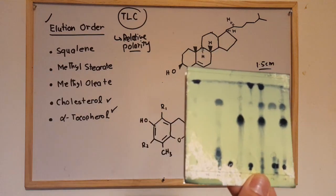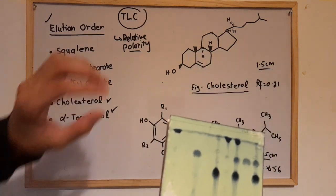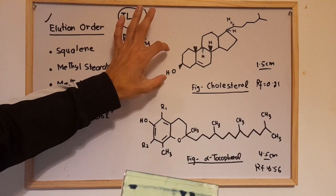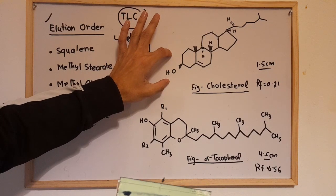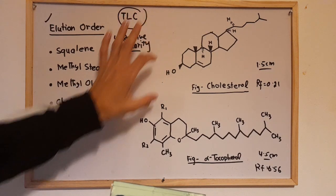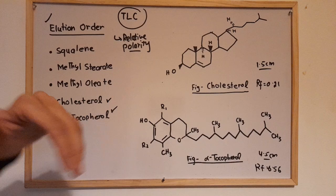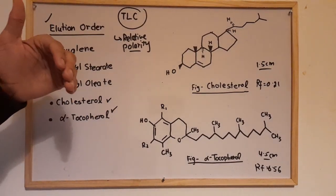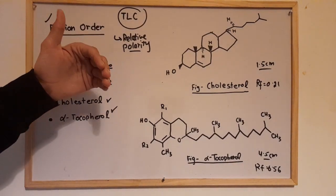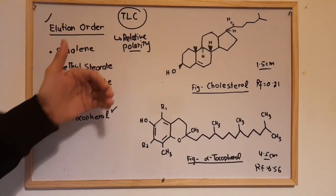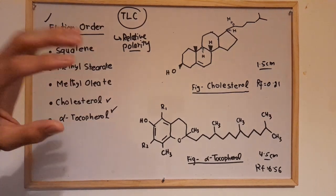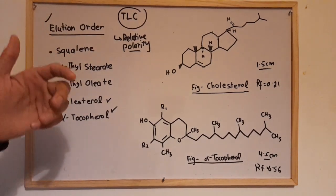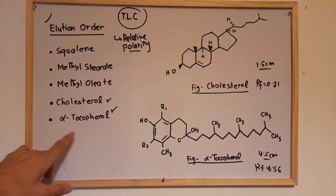So depending upon the structure, we can determine which component will elute first and which will elute later. Essentially, the component with stronger affinity for the stationary phase is retained longer and elutes later.